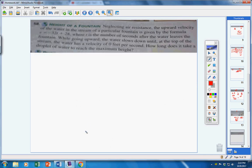Number 58. Forgetting about air resistance, the upward velocity of the water in a fountain is given by this formula. T is the number of seconds, and V is the velocity. When the water comes up, it slows down until at the top of the stream, the water has a velocity of 0 feet. So, here's your fountain right here. The water comes up and then it comes down. It has velocity on the way up and also has velocity on the way down. But right here at the top, it has a velocity of 0.